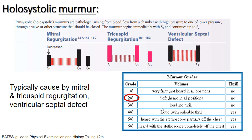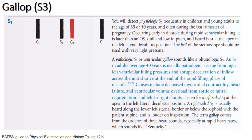Ba nguyên nhân phổ biến của holosystolic murmur là: hở van hai lá, hở van ba lá, và thông liên thất. Ở bệnh nhân này, nghe được tiếng thổi này hướng tới tình trạng hở van hai lá mức độ nhẹ.